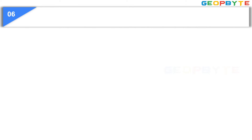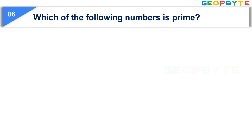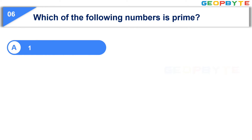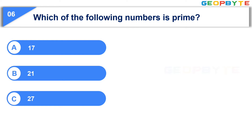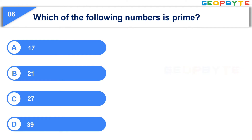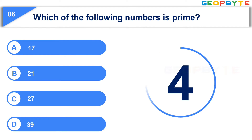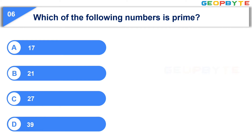The sixth question is: Which of the following numbers is prime? Option A: 17, Option B: 21, Option C: 27, Option D: 39. Your time starts now. Your time is up and the correct answer is Option A, 17.